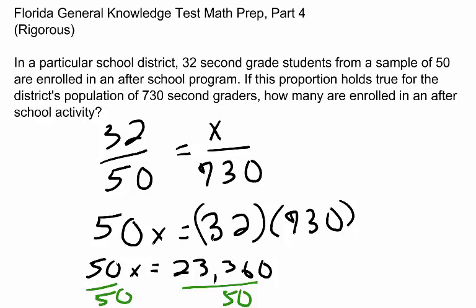You'll have a four-function calculator during the test, so you'll type in 23,360 divided by 50. This gives us our result, which is that x is equal to 467.2.